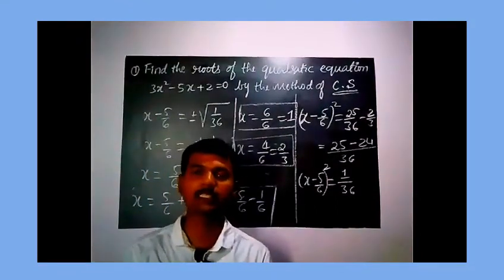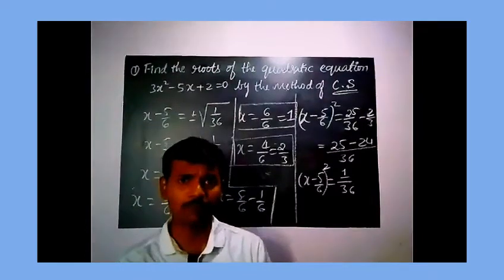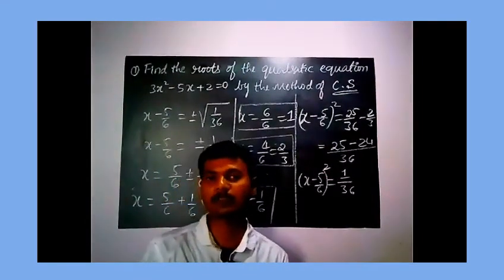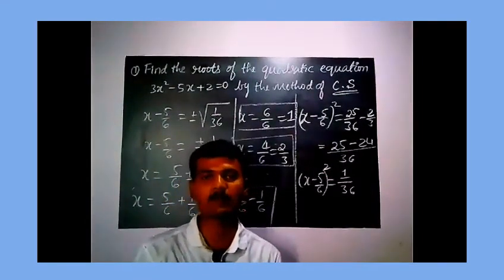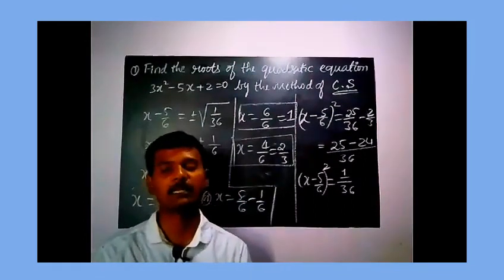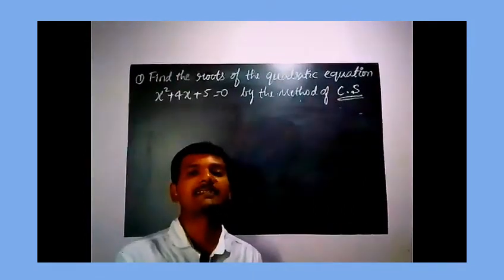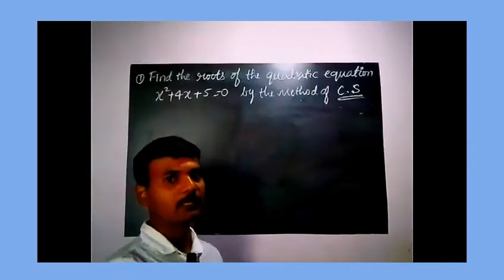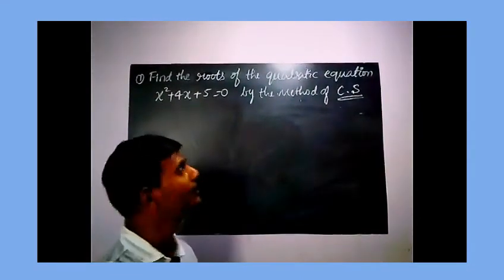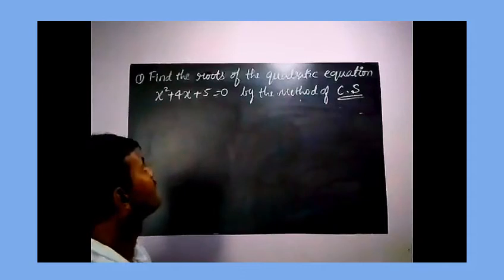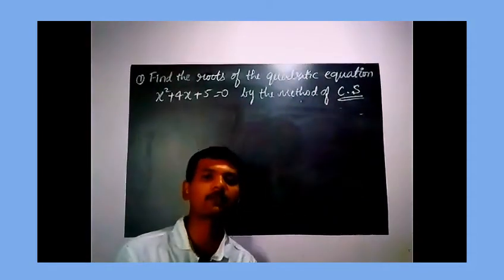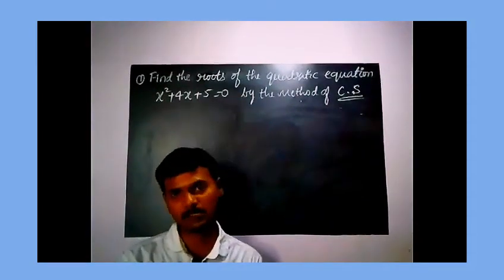Note: this method is excluded from the current year's syllabus and will be covered in higher classes. Now let us discuss the next example: find the roots of the quadratic equation x squared plus 4x plus 5 equals 0 by the method of completing the square.